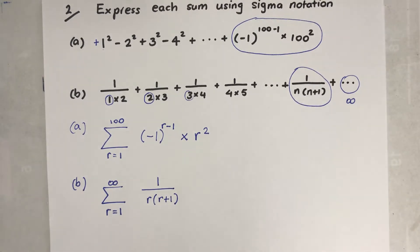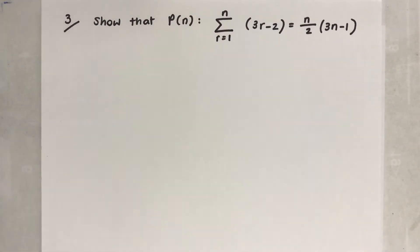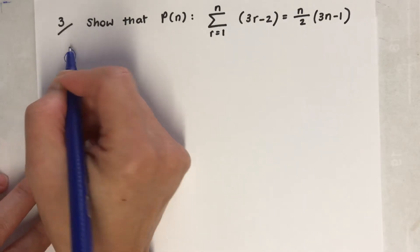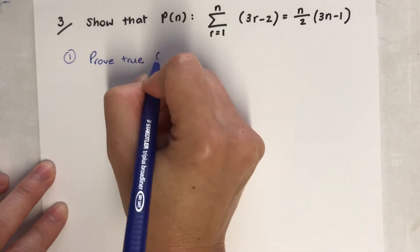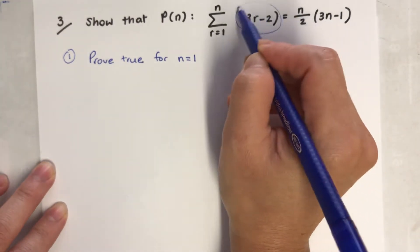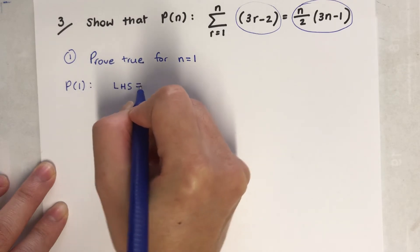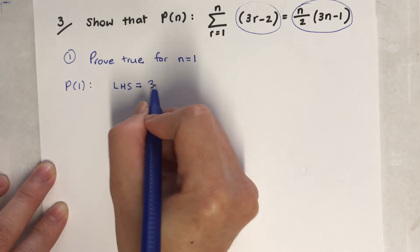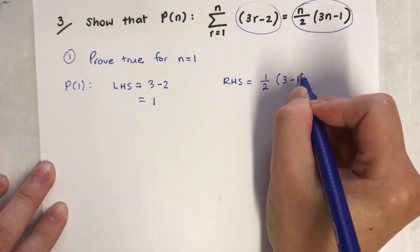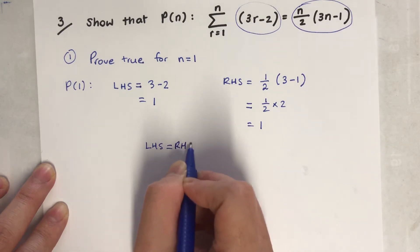Now we are getting into mathematical induction - proving that a formula is true. Step 1: always prove true for n equals 1. My left hand side: when n equals 1, I put 1 in there - 3(1) minus 2 equals 1. Right hand side: one half times 1 times (3 times 1 minus 1) equals 1 half times 2 equals 1.